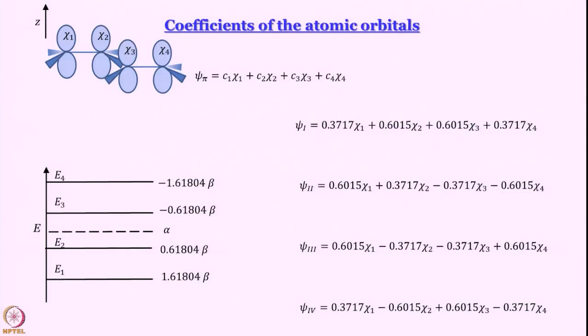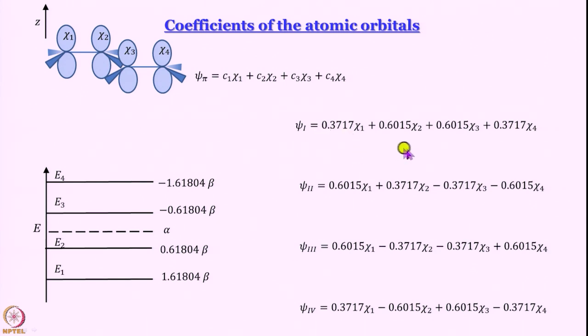We can determine the coefficients, but we will not do that here because it is a little tedious — whoever is interested is welcome to give it a try. I am just going to show you the results. These are the energy levels e1, e2, e3, e4 — actually in hindsight I should have written them as roman numerals I, II, III, IV, because I have denoted the wave functions by psi_I, psi_II, psi_III, psi_IV to differentiate the labels for the molecular orbitals from the labels of the atomic orbitals.